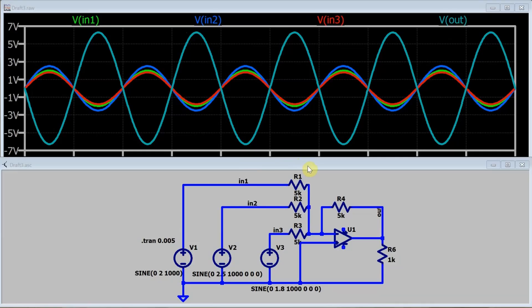And here we have the circuit in LTSpice. You can see my inputs here in red, green, and blue, and my output here in a kind of a turquoise, and it's 180 degrees out of phase with the inputs, and is equal to the sum of those three inputs. And inverted of course.